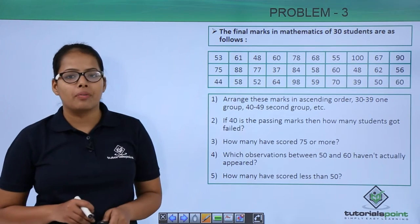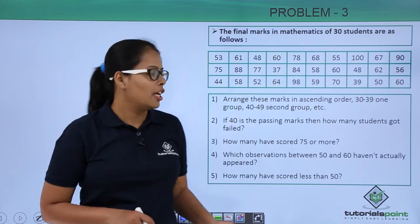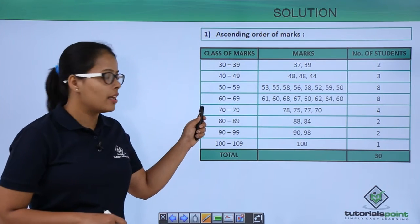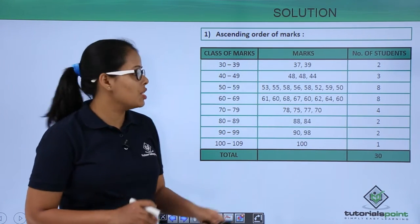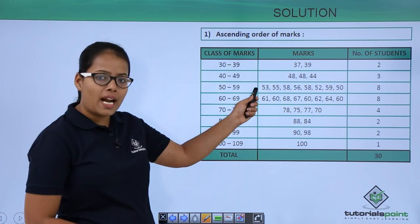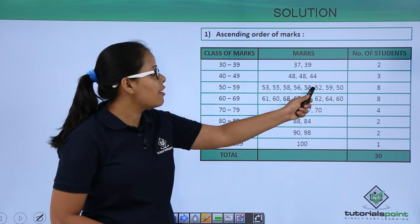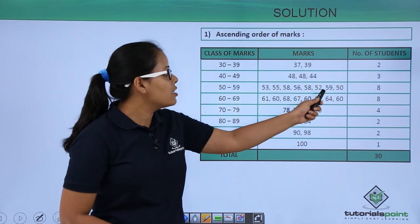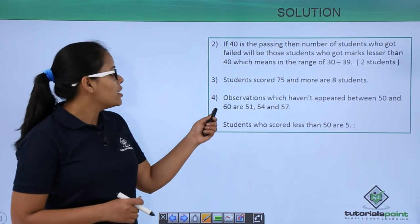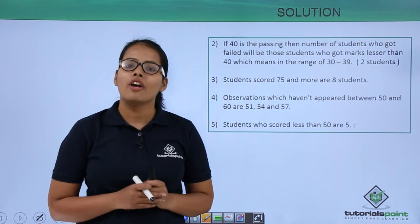In the fourth question, which observations between 50 and 60 haven't actually appeared? In the interval 50 to 60, you can see there is 53 and 52, but there is no 51 — so that is missing. There is no 54 — that is also missing. 55 is there, 56 is there, but 57 is not there. 58, 59, and 60 are there. So the missing observations are 51, 54, and 57.